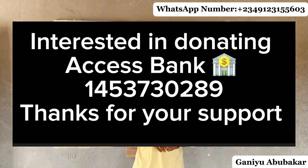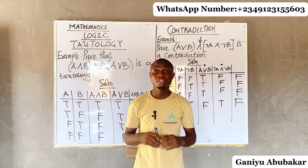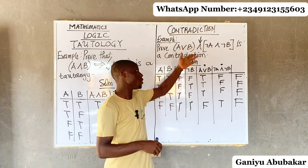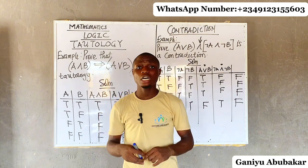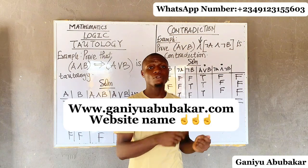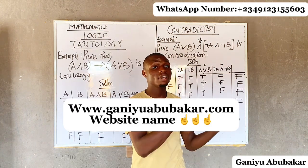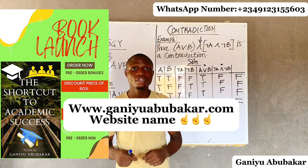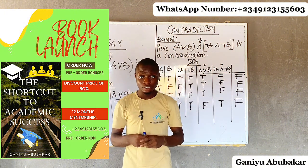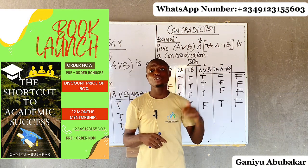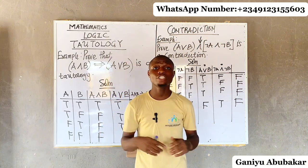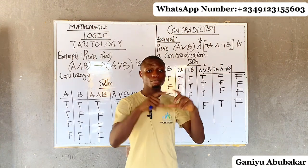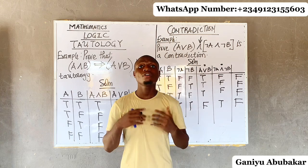Welcome to Excellent Link Academy. If you're interested in supporting us or donating, check our account details on the next page. You can reach me via WhatsApp. I've also created a website with close to 200 videos for mathematics and chemistry where you can purchase courses. I also launched a book called 'The Shortcut to Academic Success' for Nigerian students — it costs just one thousand naira. Reach out and I'll send you the PDF after payment.